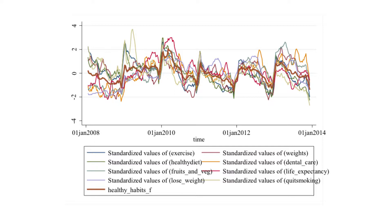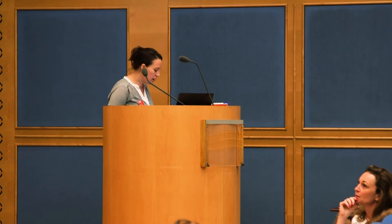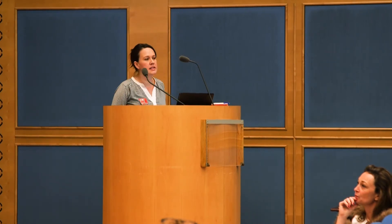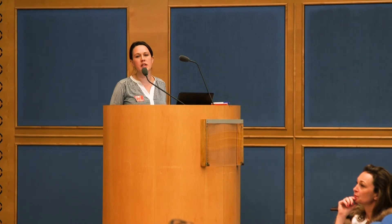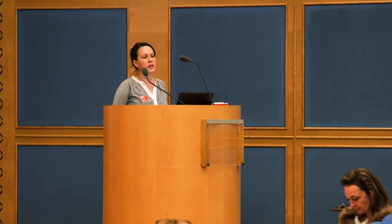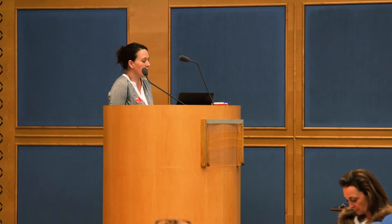Something that's interesting about this series is that we pretty consistently observe sharp peaks during the first week of January, and then it declines over the year. We also want to make sure our categories make sense — that they make sense with what we observe in the world. So we're constantly trying to check that the data we're using makes sense given what we know about the world.